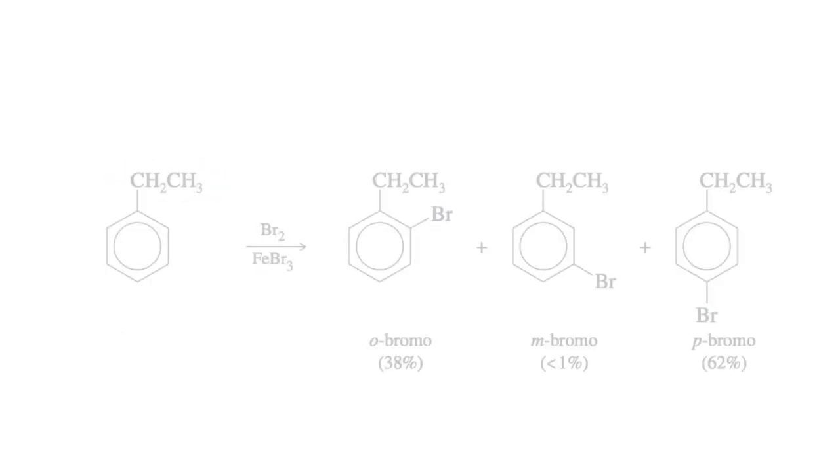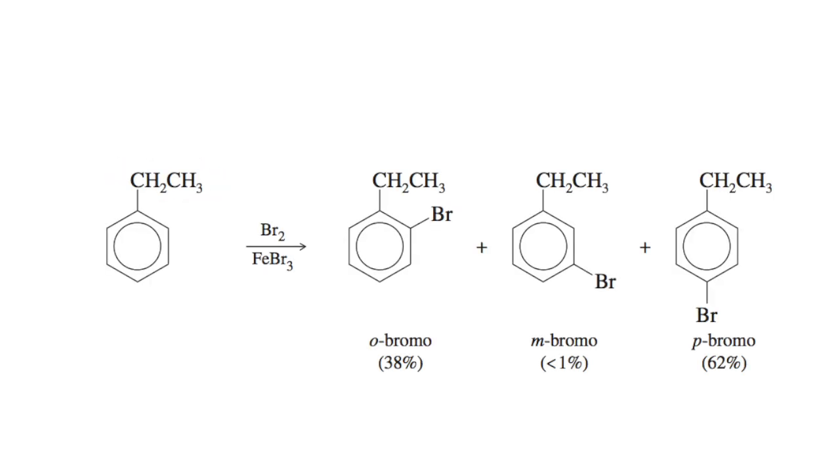Ethyl groups are ortho, para directing. Para is a little bit less because there is some steric hindrance there, and meta is negligible because of resonance.